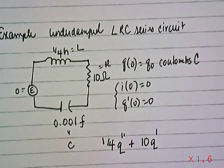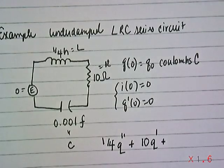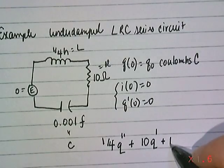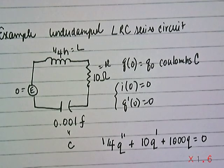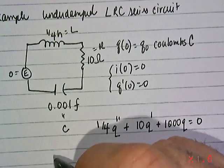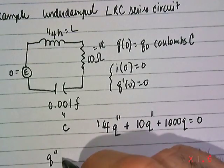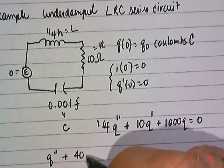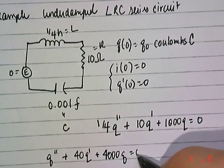And then if C is 0.001, then 1 over that would be 1,000. So we'll have 1,000 times Q. And we'll assume that we have no external voltage, so it's zero. Clean this up by multiplying through by 4. What we have now is Q double prime plus 40 Q prime plus 4,000 times Q is equal to 0.